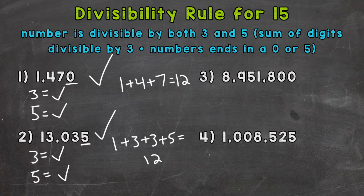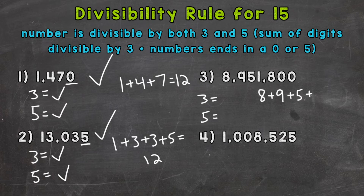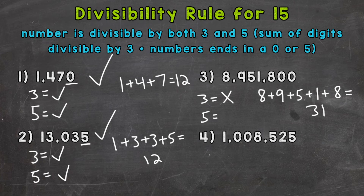On to number three: eight million, nine hundred fifty-one thousand eight hundred. Let's see if that number is divisible by both three and five. Taking the sum of the digits: eight plus nine plus five plus one plus eight. Eight plus nine is 17, plus five is 22, plus one is 23, plus eight gives us 31. Now 31 is not divisible by three, so our original number is not divisible by three. This number does end in a zero so it is divisible by five, but it needs to be divisible by both three and five to be divisible by 15. So number three is a no.